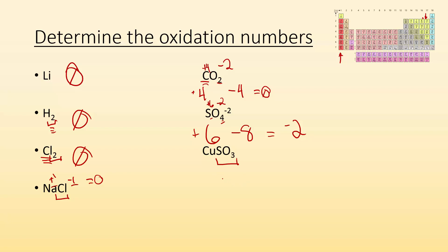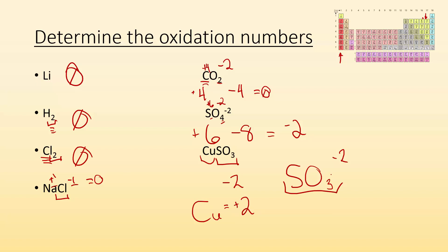SO₃²⁻ — the sulfite ion has a minus two charge overall. If I have SO₃²⁻ with one sulfur, I know oxygen is minus two and there are three of them, so I get minus six from all the oxygen. To go from minus six to minus two, I need a plus four. There's only one sulfur, so that sulfur must be plus four.